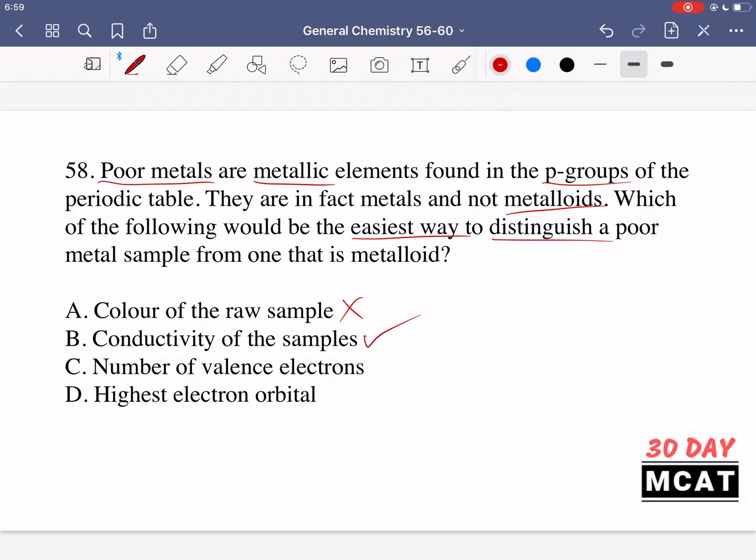Option B says conductivity of the samples. Yes, this would probably be the easiest way. Just take a property that metals have that's different in metalloids. If you measure the conductivity of two samples, the one which is highly conductive will be the metal and the other one is probably a metalloid.